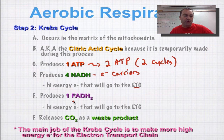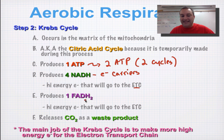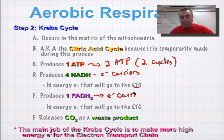You're also going to produce another type of electron carrier that is very similar in chemical structure to NAD, called FADH2. This is just an electron carrier — it does the same thing as NADH — and it's also going to the electron transport chain.